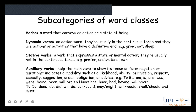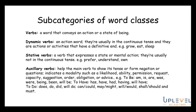Verbs are words that convey an action or state of being, also known as doing words. We get different types. Dynamic verbs are action words usually in the continuous tense — actions that have a definitive start and end, for example grow, eat, sleep. Stative verbs express a state or mental action and are usually not in the continuous tense — for example prefer, understand, own — and they usually don't have a start and stop time.